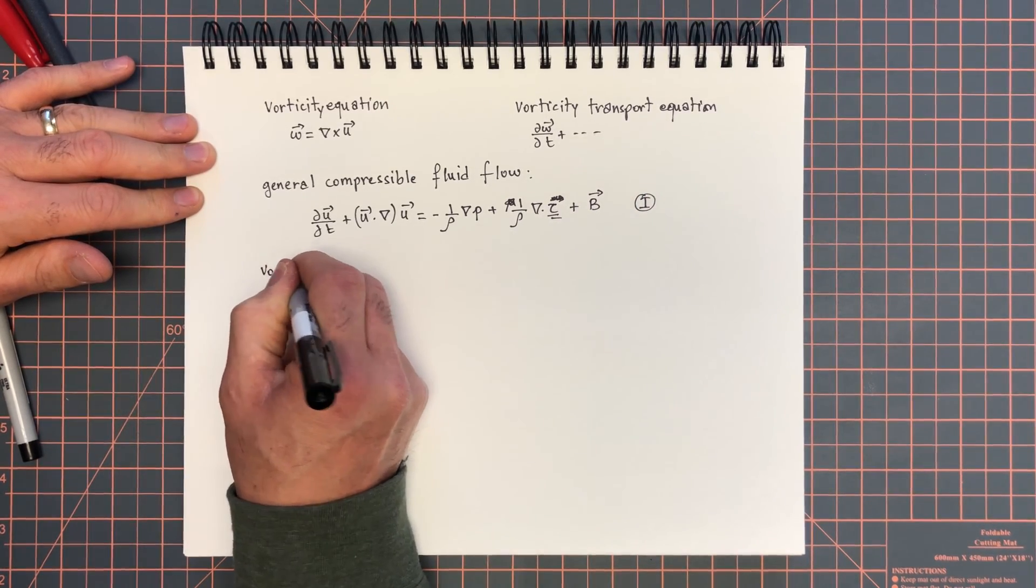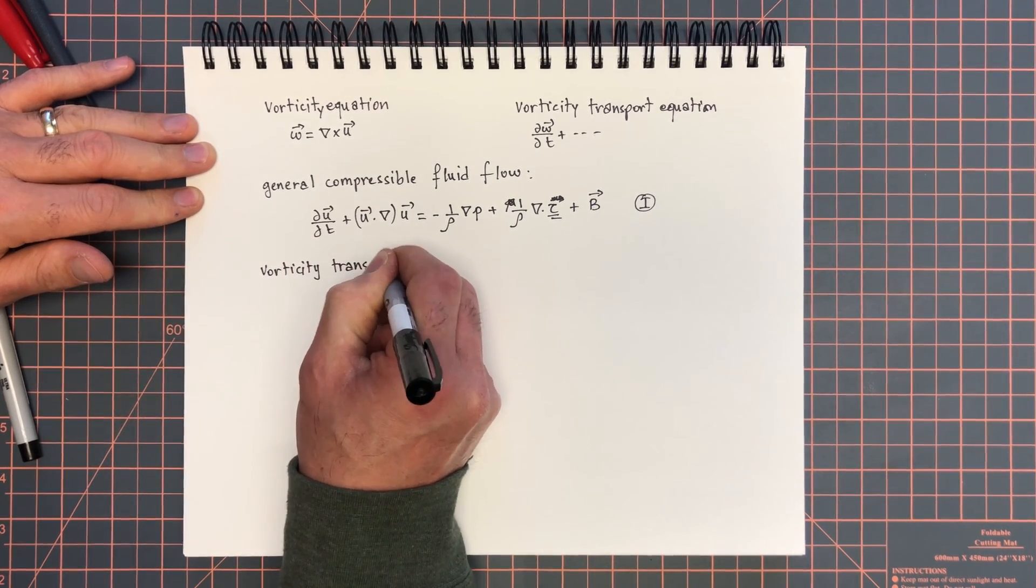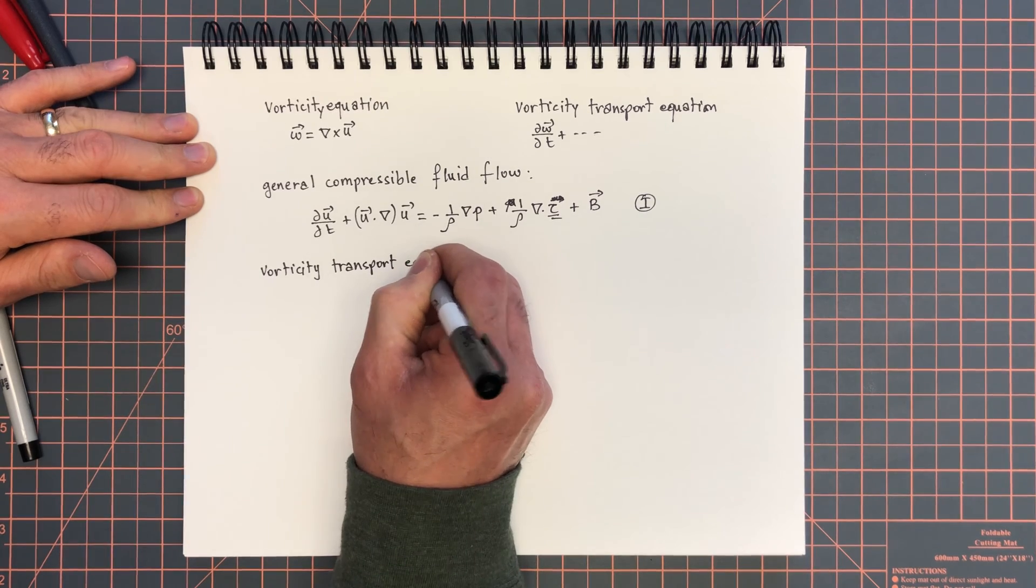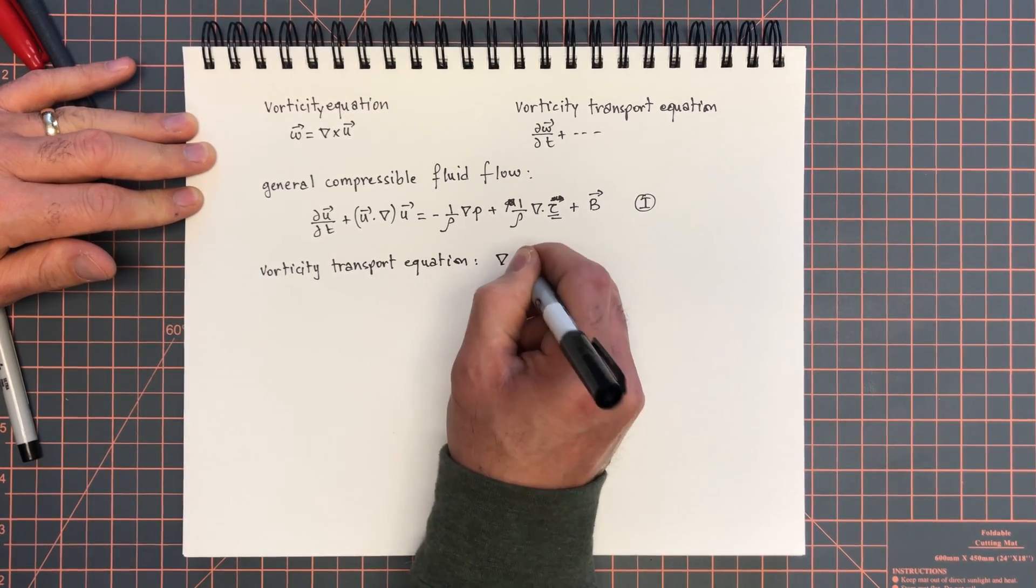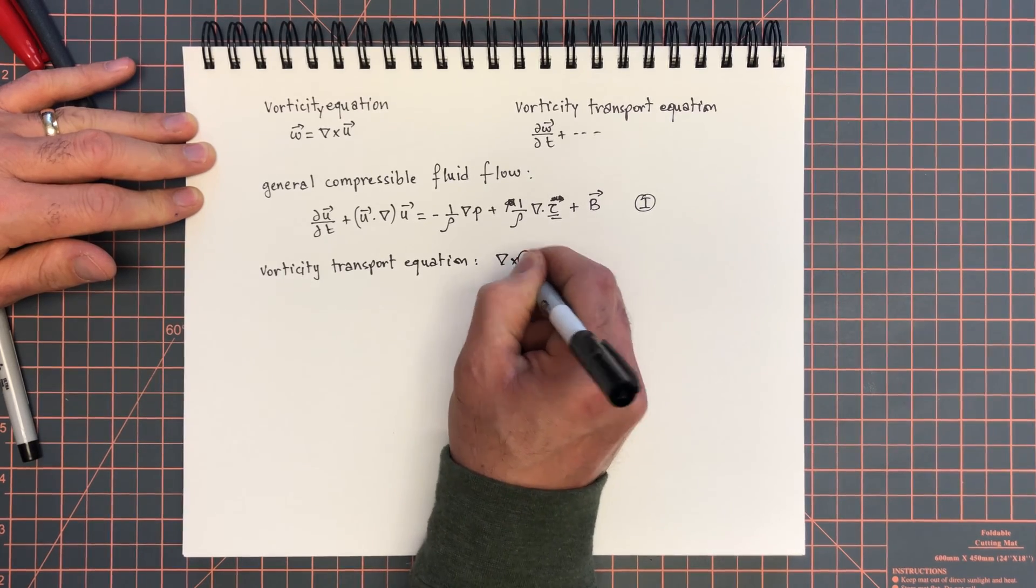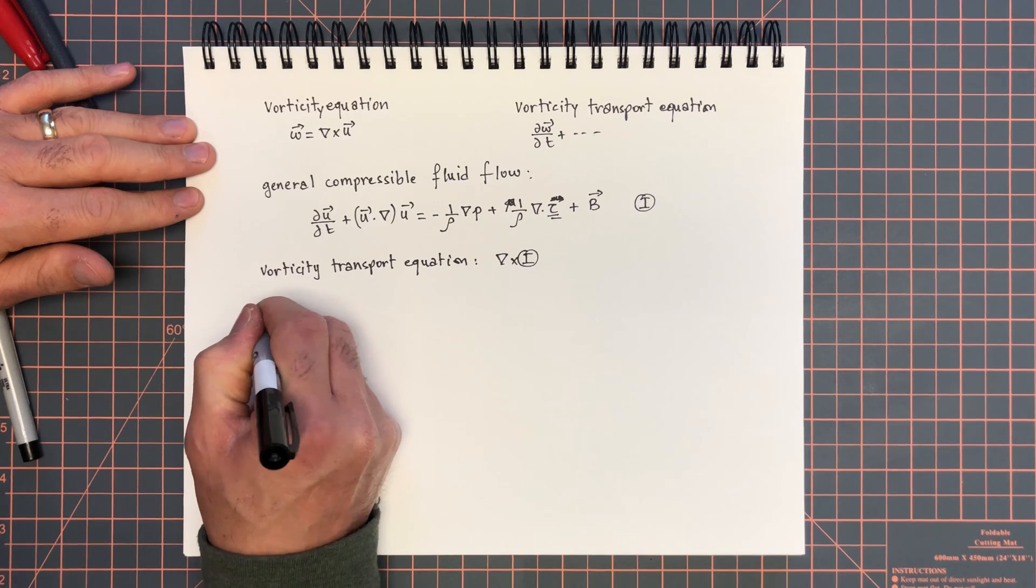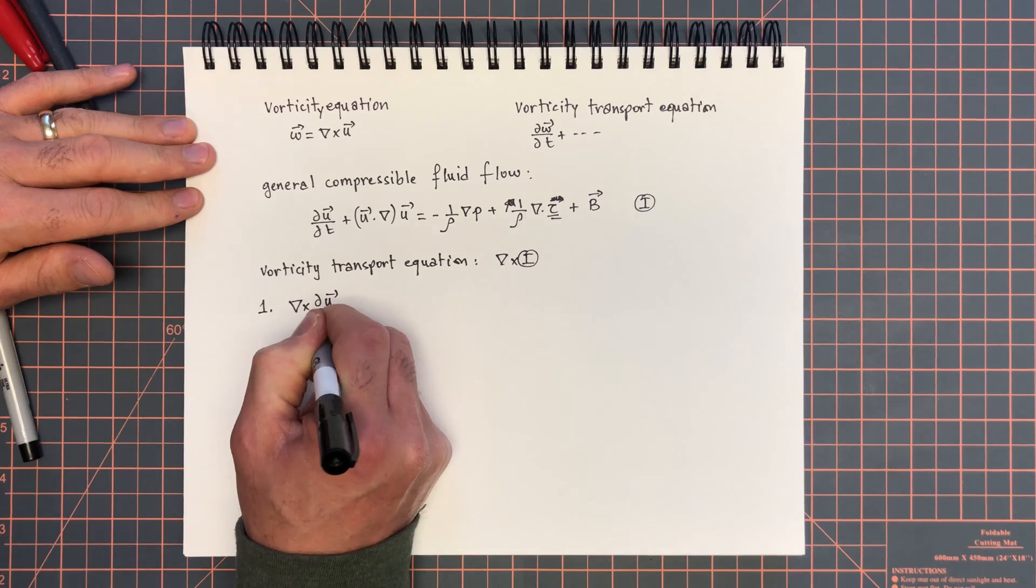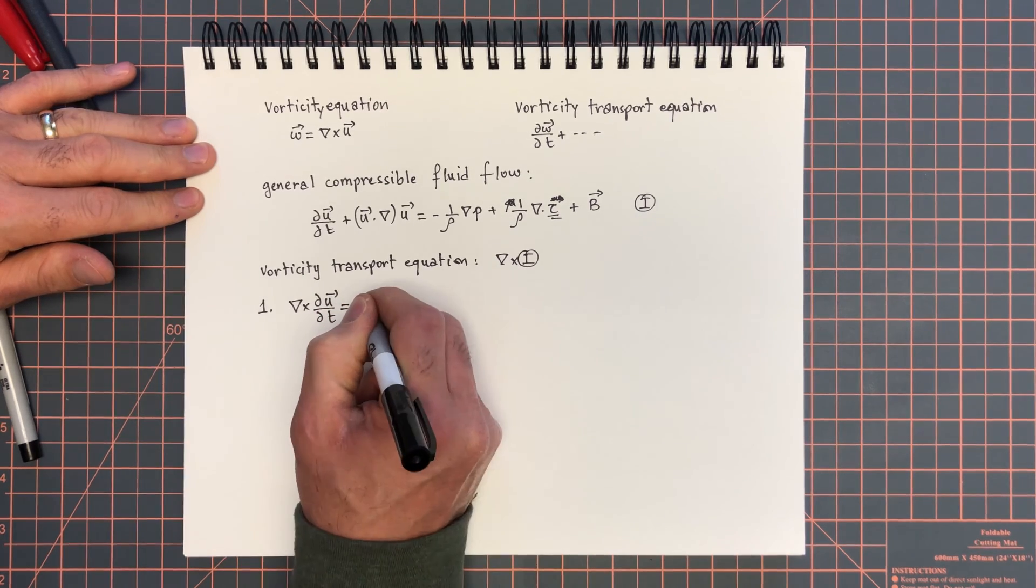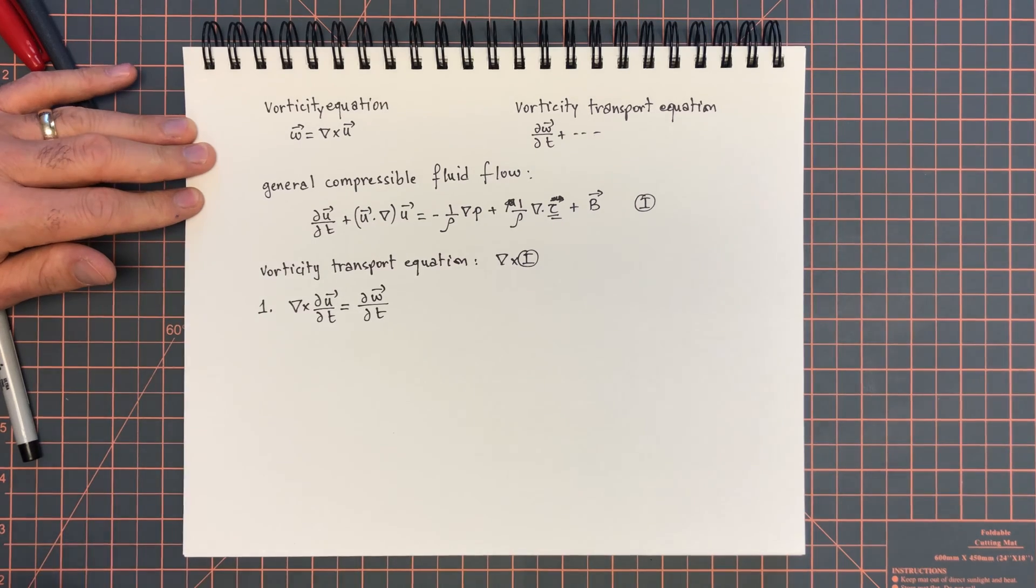So vorticity transport equation is derived by taking the curl of equation 1. Let's do this one term at a time. Term 1, curl du by dt, that gives us d omega by dt. Easy.